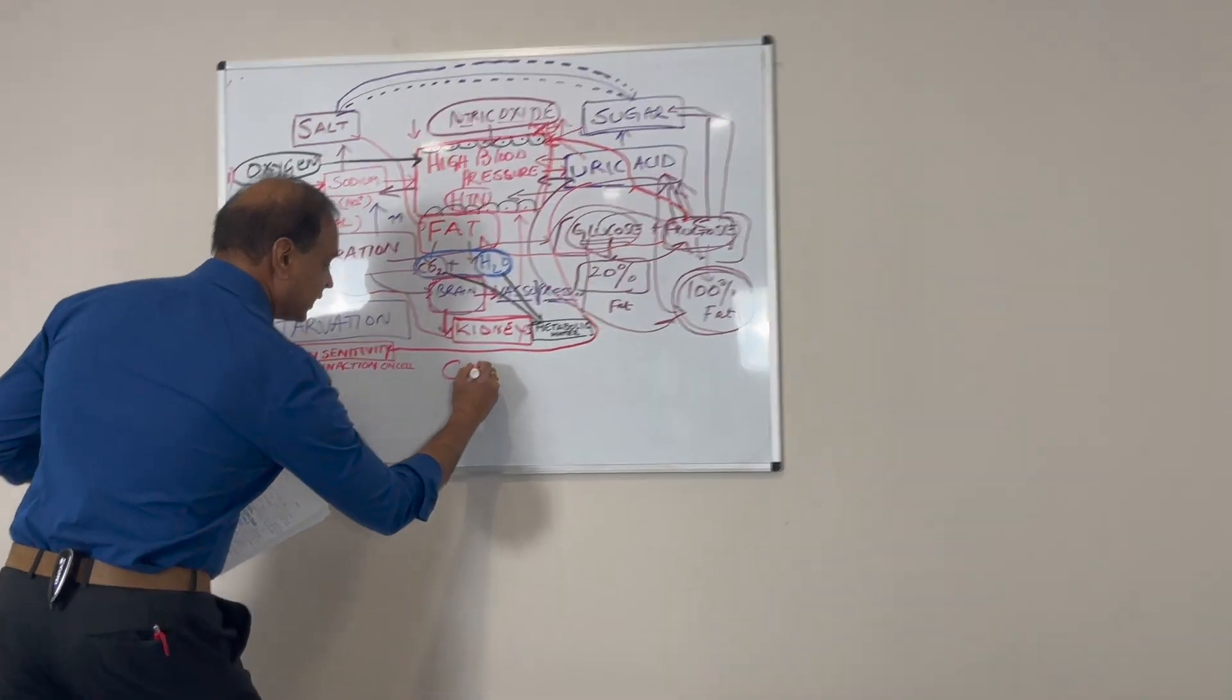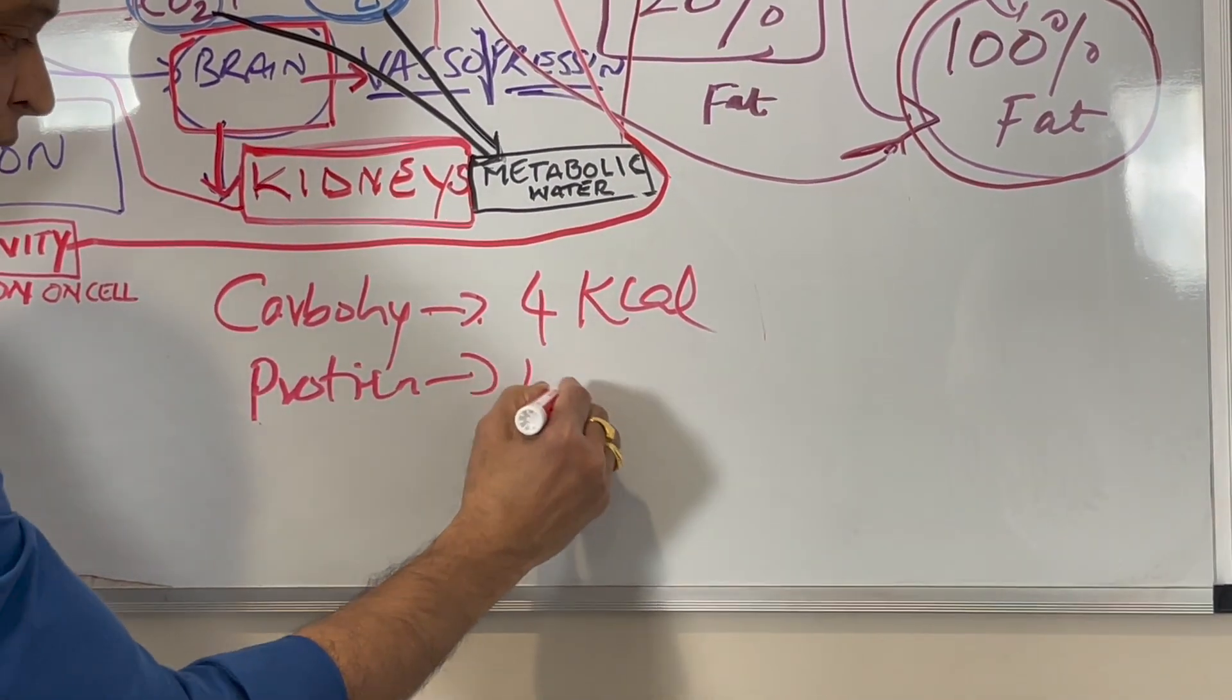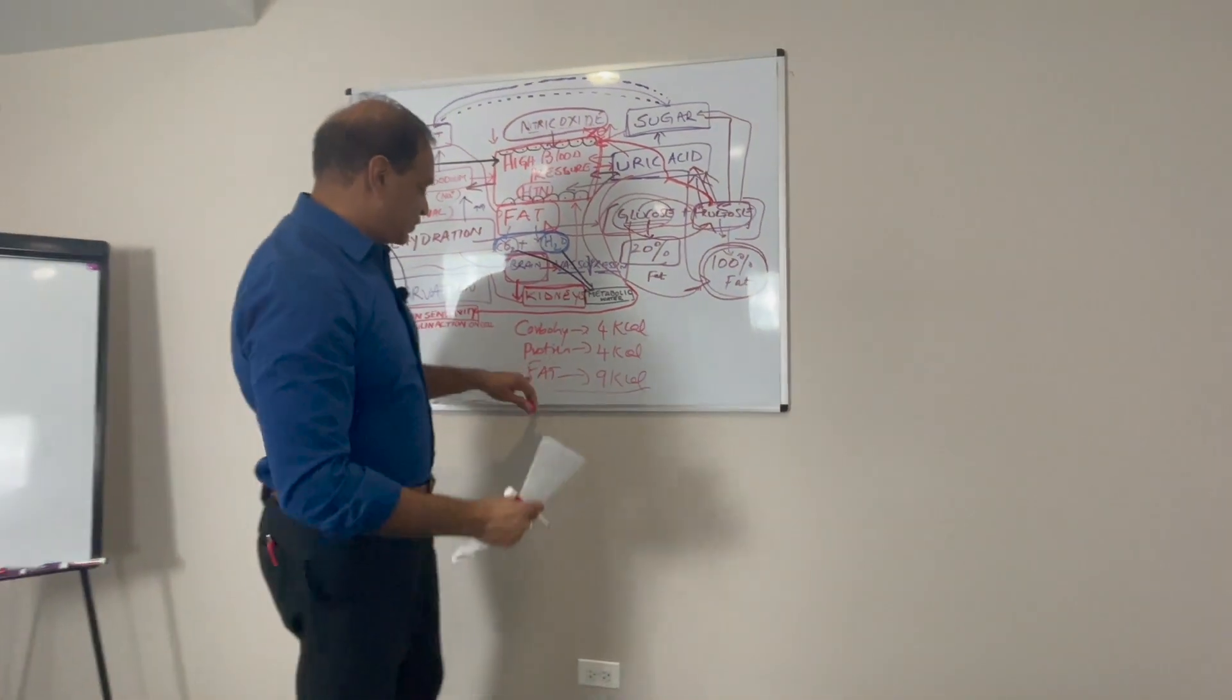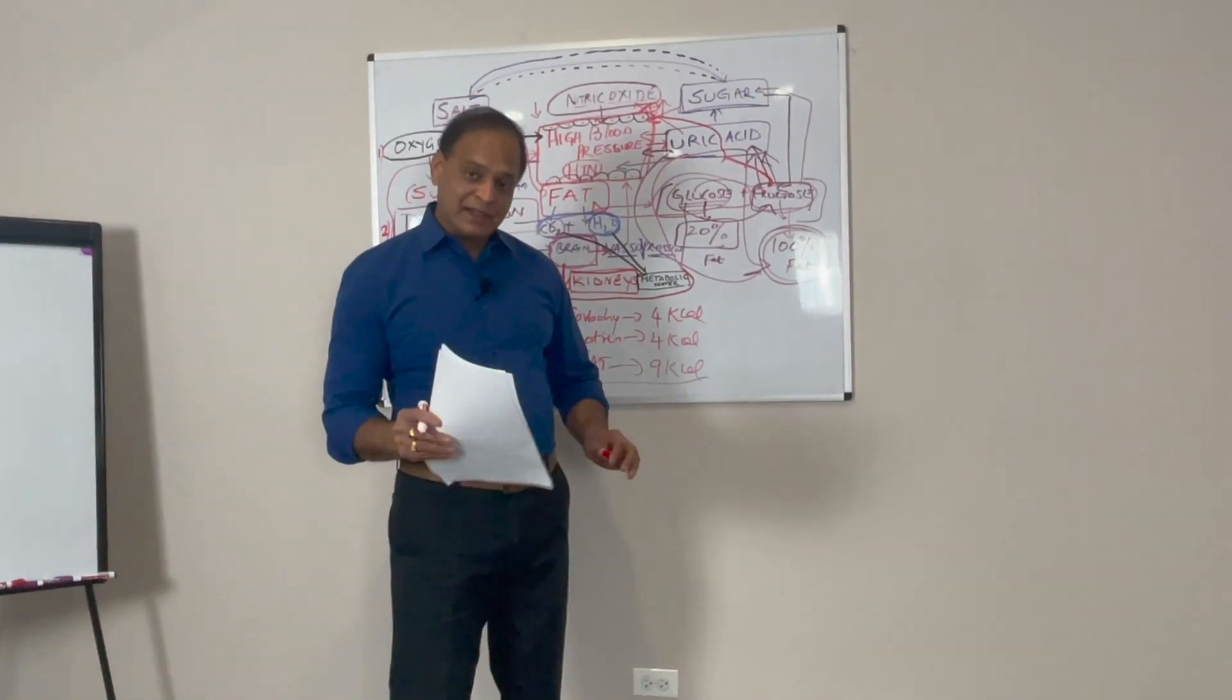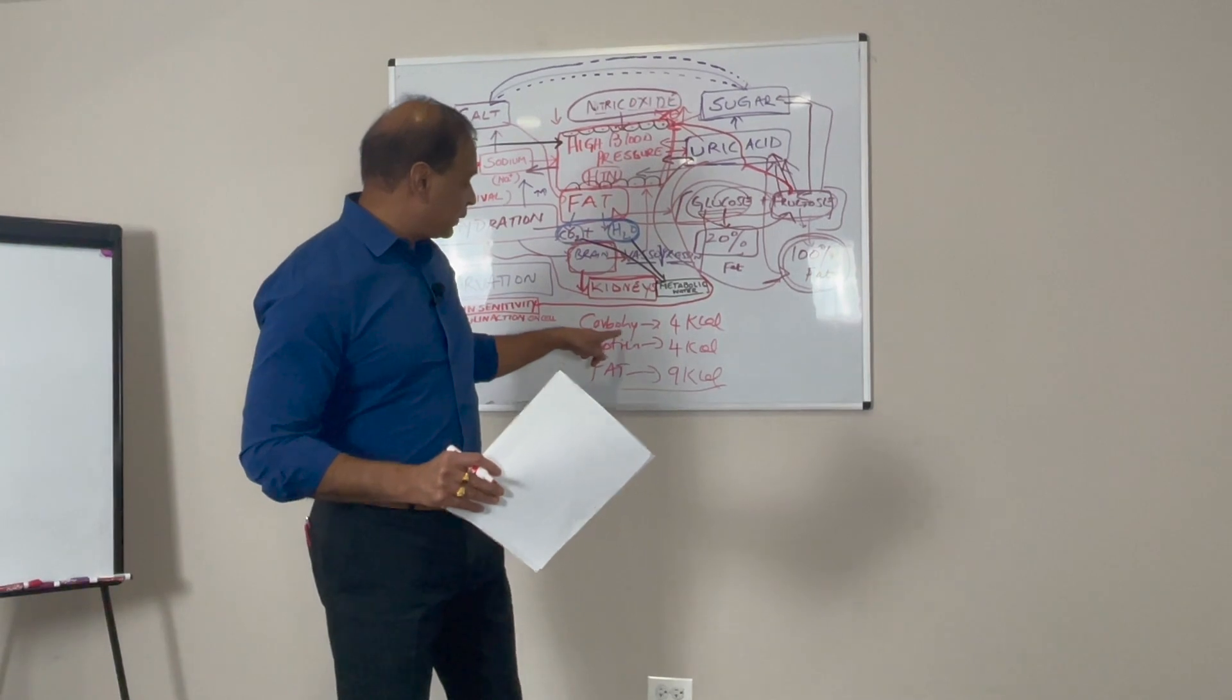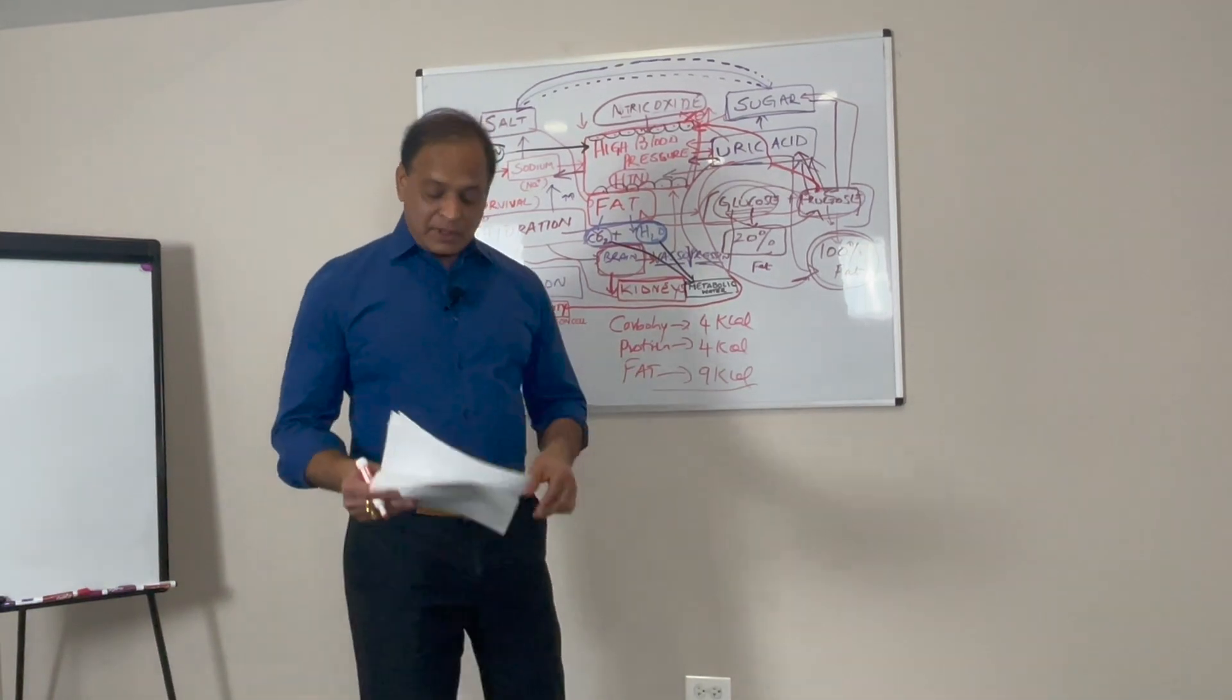Carbohydrate gives 4 kilocalories of energy, protein gives the same 4 kilocalories, and fat gives 9 kilocalories. What has been assumed is since fat gives 9 kilocalories for the same gram, you should do less of that. When you restrict and give a lower calorie total but not talk about the quality of foods, we have been doing this.